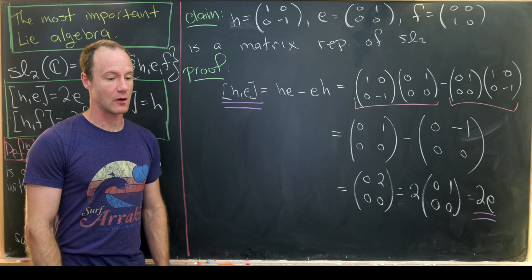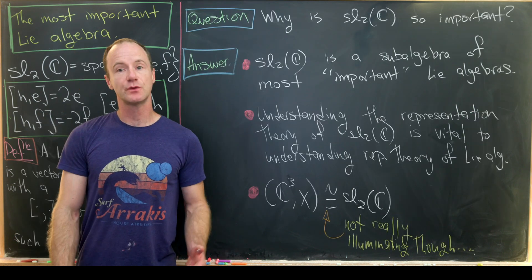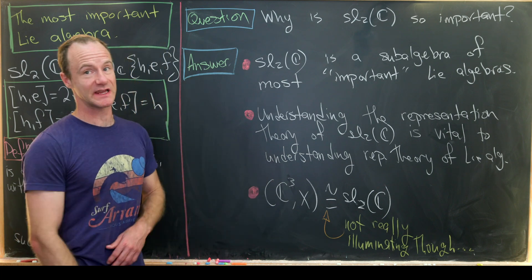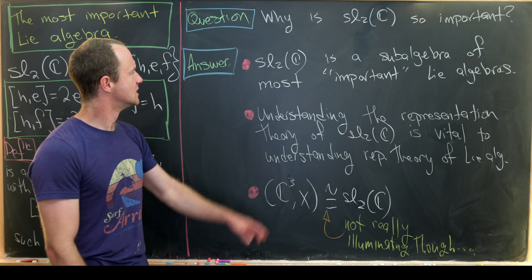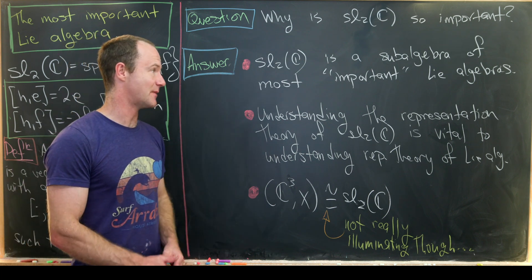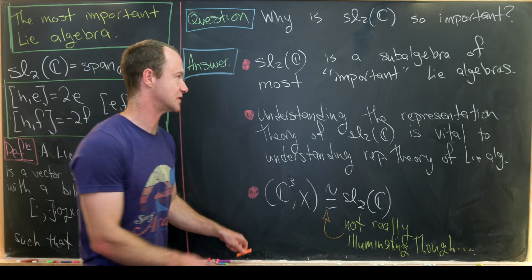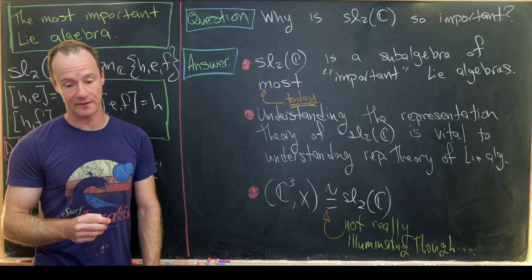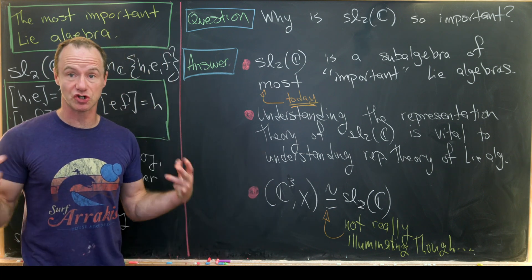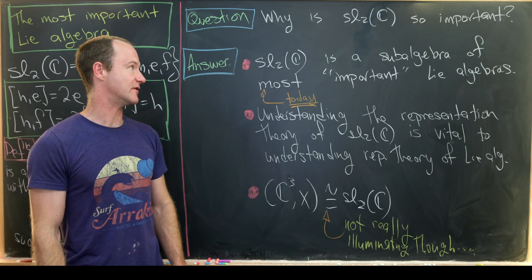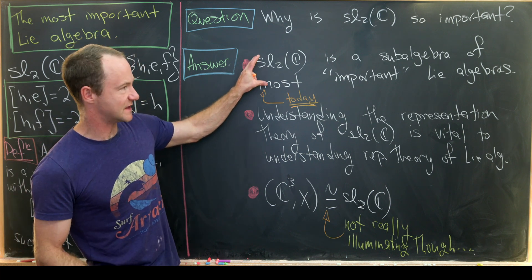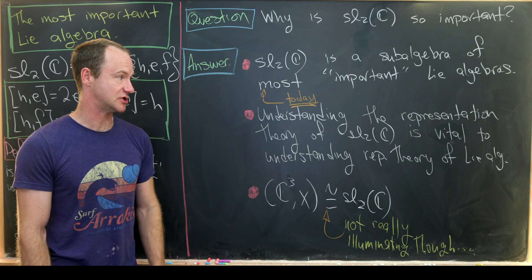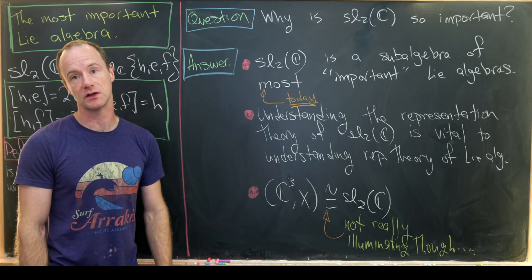Now let's talk about why SL2 is an important Lie algebra. We looked at an abstract definition of SL2 as well as a nice matrix representation. Now we want to at least partially answer the question: why is SL2 so important? The first part of the answer is that SL2 is a subalgebra of most of the important Lie algebras. We can't look at all Lie algebras today, but we'll look at a couple of examples of larger Lie algebras that naturally contain a copy of SL2.